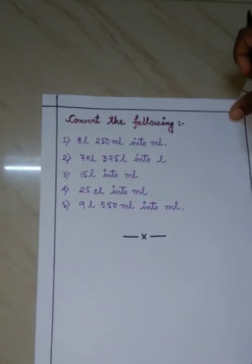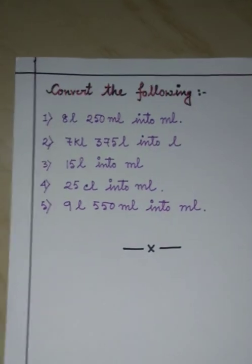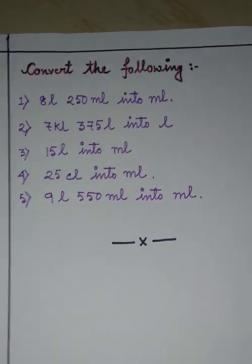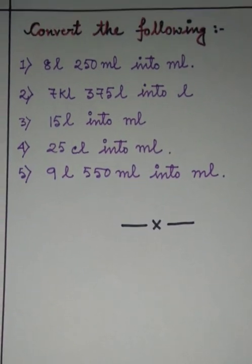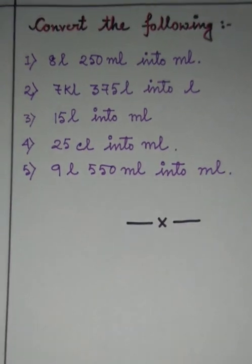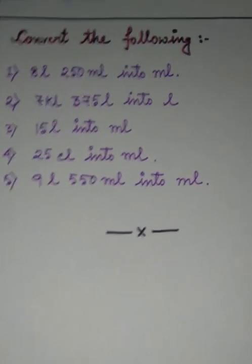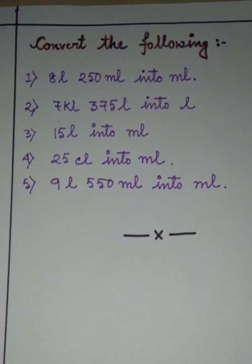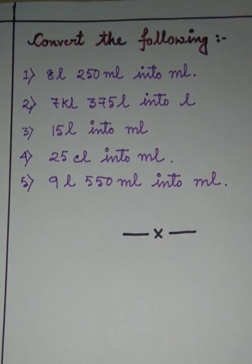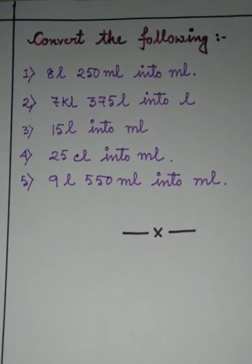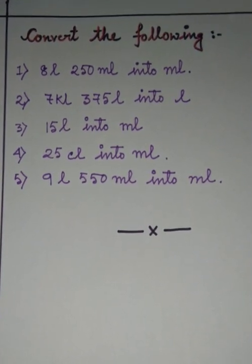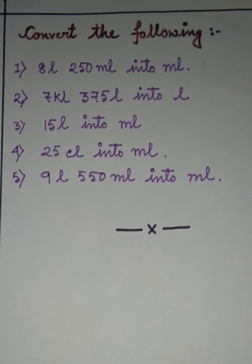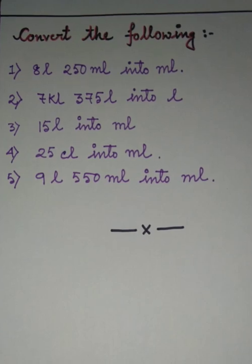Now we will go to page number 3. Here you can see there are 5 sums given. You have to do these 5 sums in your school copy. Give the heading the name of the chapter — Jugs and Mugs. Note down the 5 sums from the video by taking a screenshot, then do the sums in your maths copy. You will get the answers in the next video. Till then, practice your sums and stay good and stay happy. Thank you.